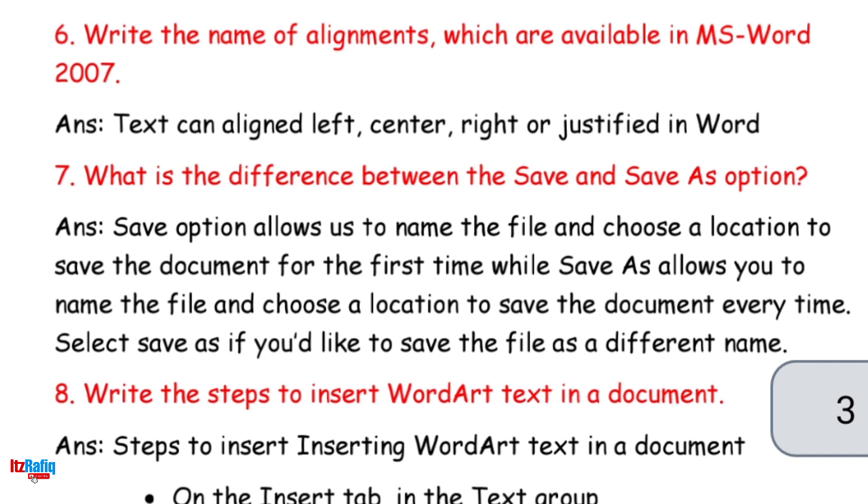7. What is the difference between the save and save as option? Answer: Save option allows us to name the file and choose a location to save the document for the first time while save as allows you to name the file and choose a location to save the document every time. Select save as if you'd like to save the file as a different name.